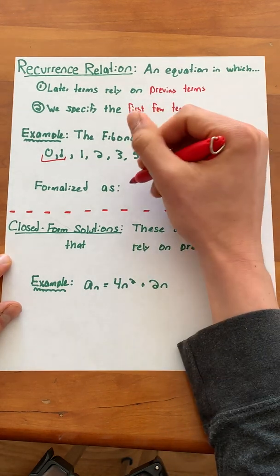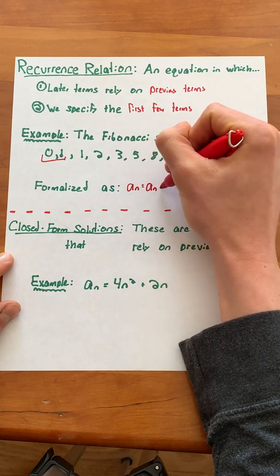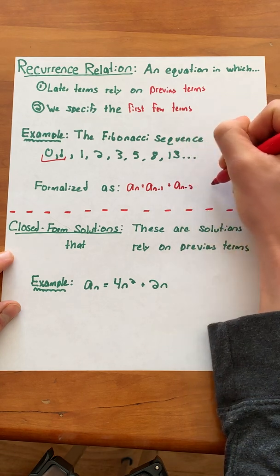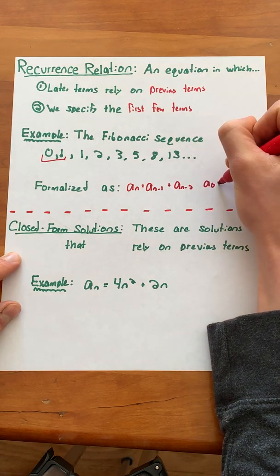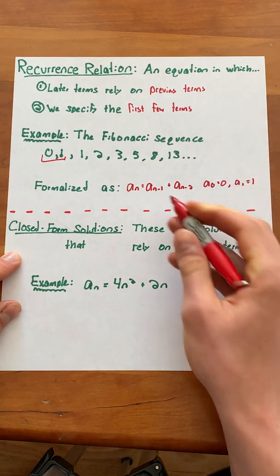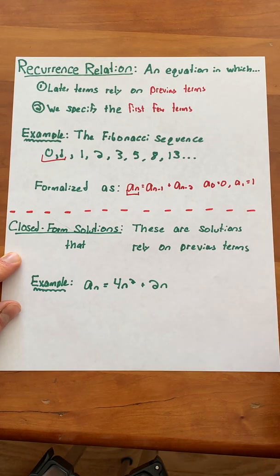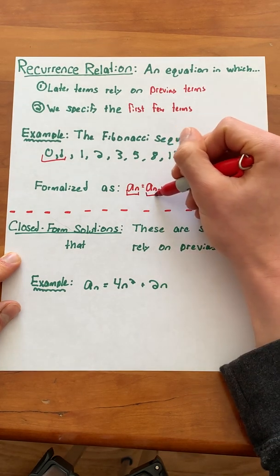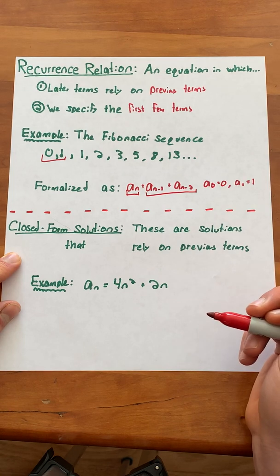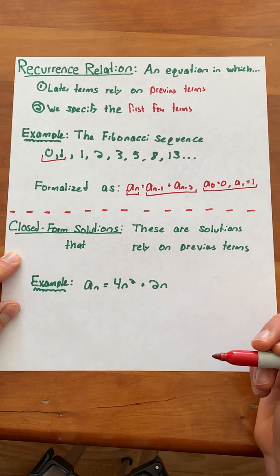We could formalize this as a of n equals a of n minus 1 plus a of n minus 2, where a of 0 equals 0 and a of 1 equals 1. This a of n represents the current term that we're solving for, while a of n minus 1 and a of n minus 2 represent previous terms. This is where we specify the first few terms.